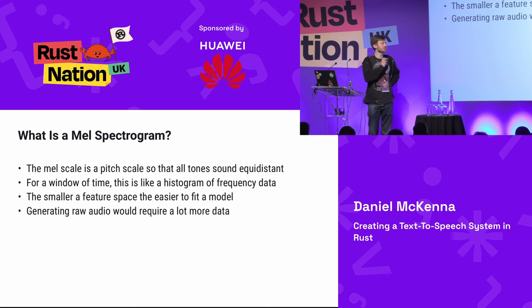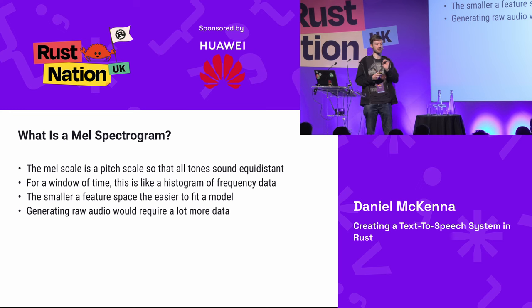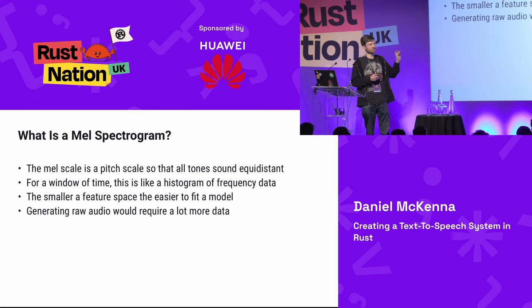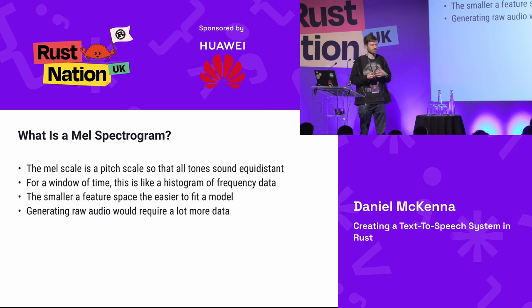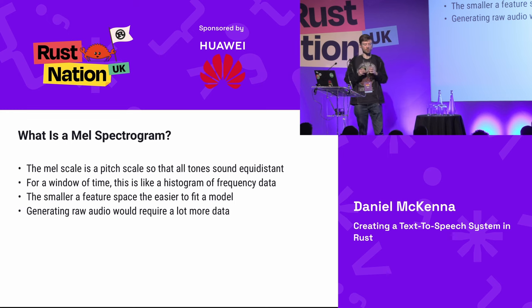We're going to use a MEL spectrogram. The MEL scale is a pitch scale designed on human perception where every tone sounds equidistant. It loses resolution outside the ranges of human hearing and has the most data where our hearing is strongest — the range of a human voice. This ends up binning frequencies into different buckets, compressing data further and keeping it focused on where human speech exists. If we've recorded data with the same microphone, we don't want the neural network wasting time learning the noise profile of our microphones.